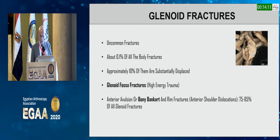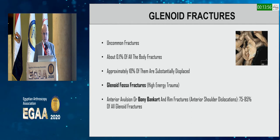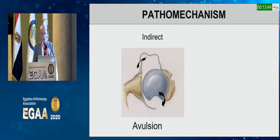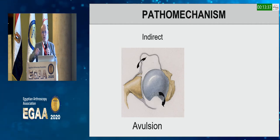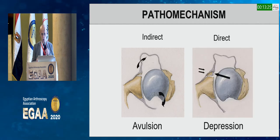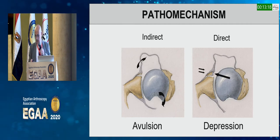Arthroscopic treatment of glenoid fractures: the epidemiology shows this is a rather uncommon fracture — about 0.1 percent of all body fractures — and only 10 percent of those are substantially displaced. Glenoid fossa fractures are high-energy or avulsion injuries. Rim fractures are the vast majority. The pathomechanism can be indirect — like an avulsion from dislocation detaching a piece of the glenoid rim along with the labrum and capsule — or direct impact causing a depression fracture.